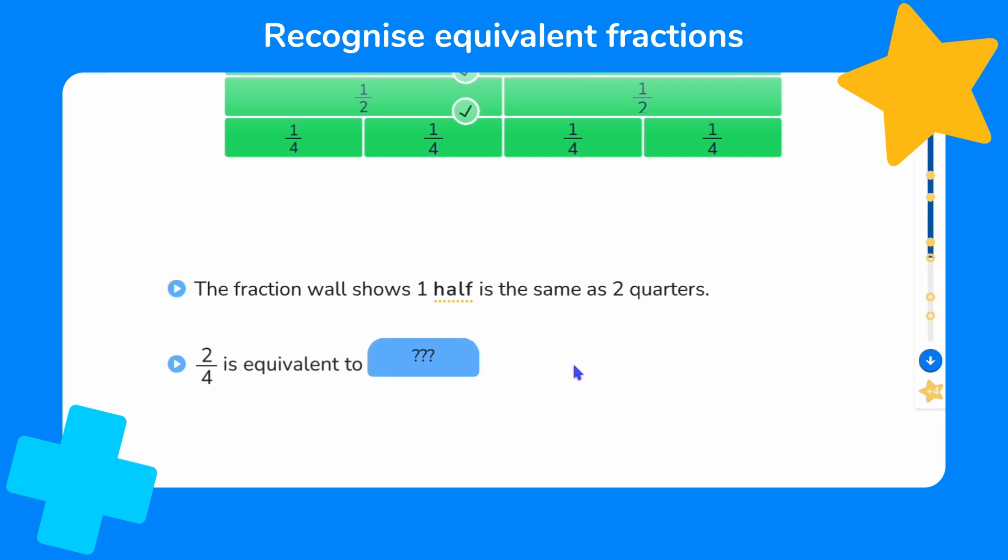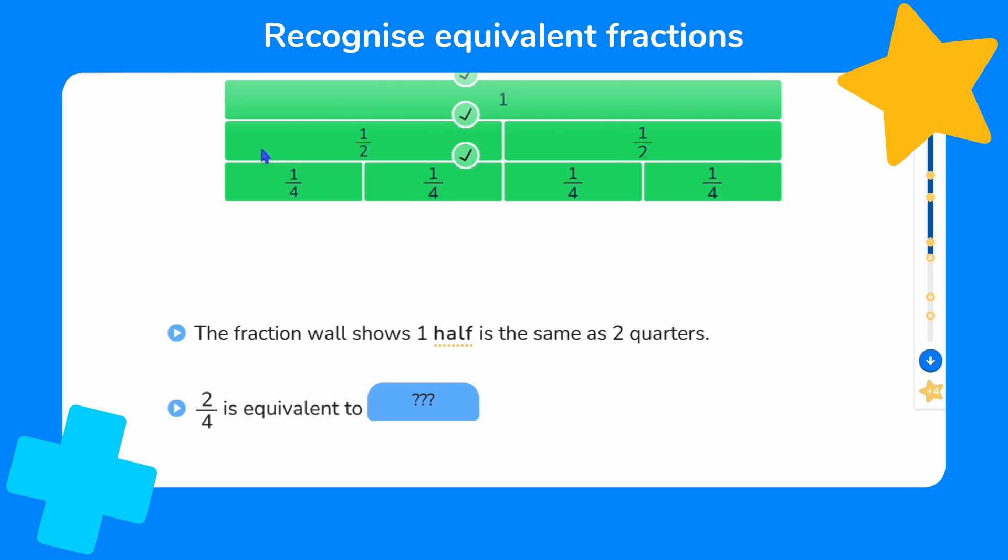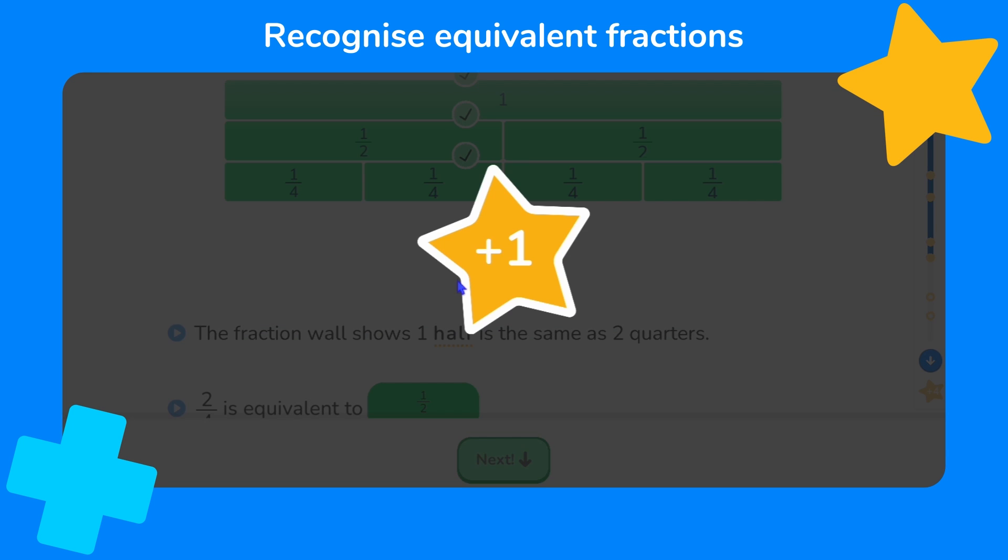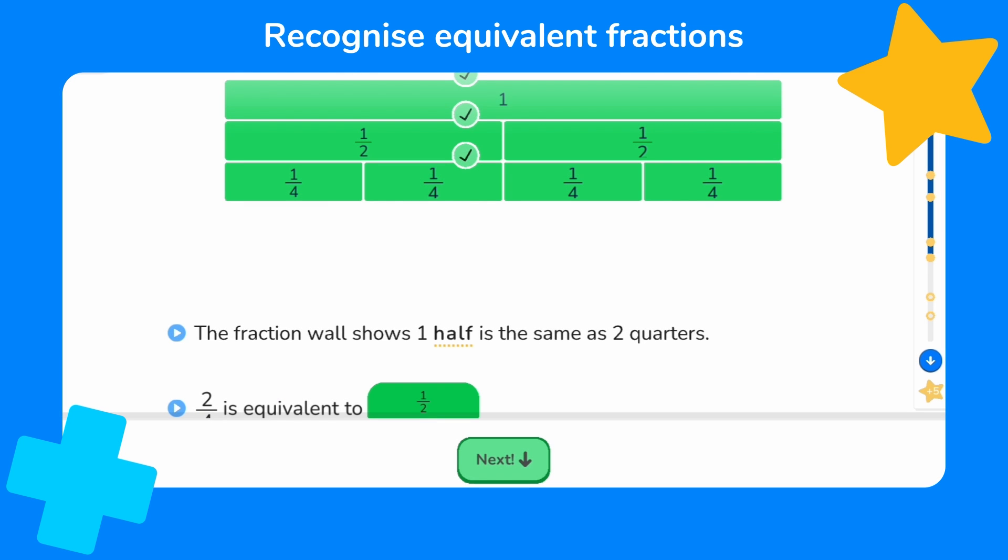The fraction wall shows one half is the same as two quarters. So two quarters is equivalent to one half. Great job.